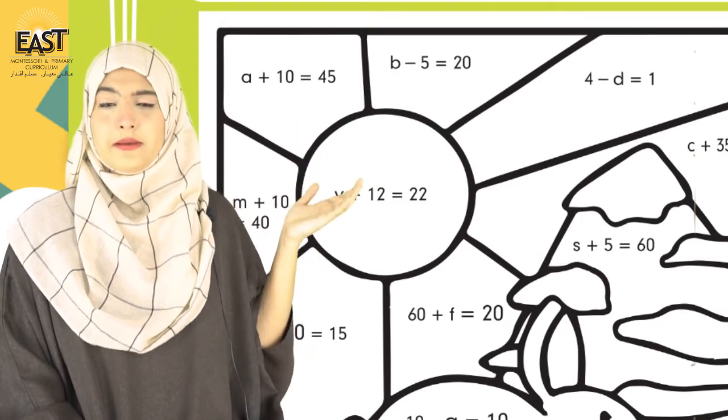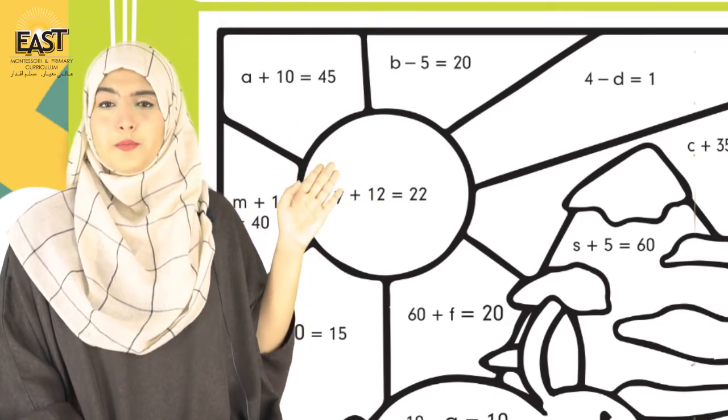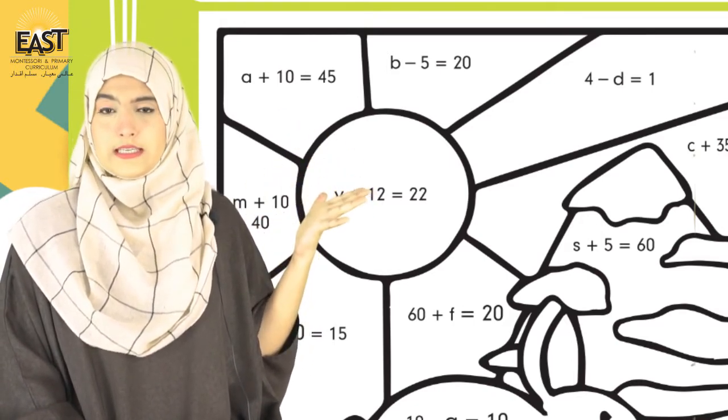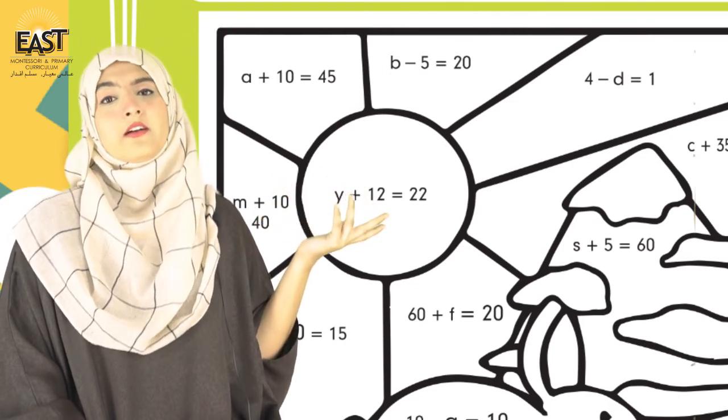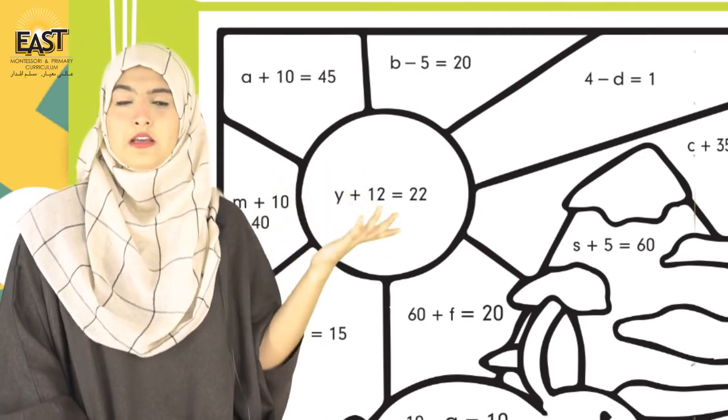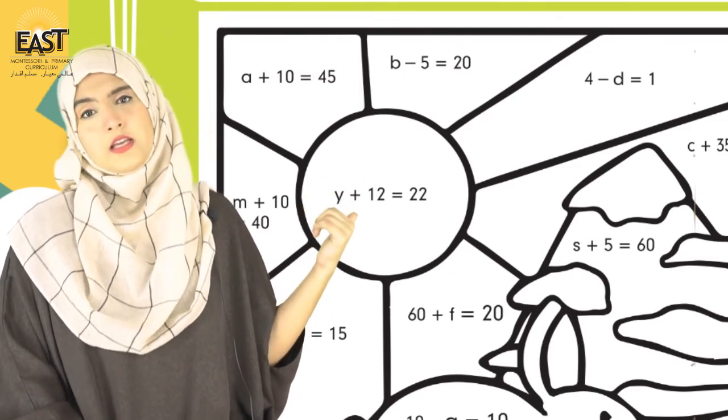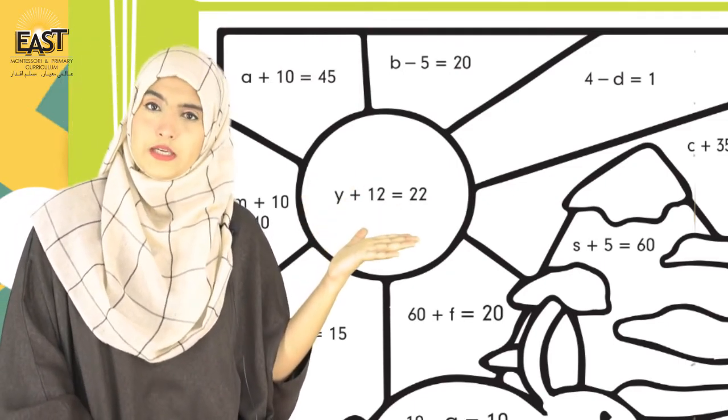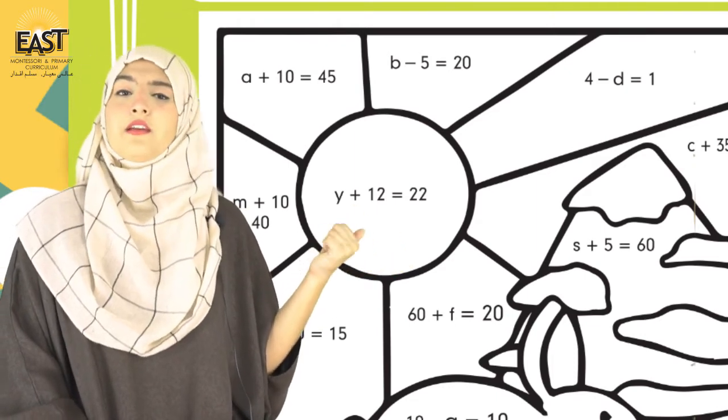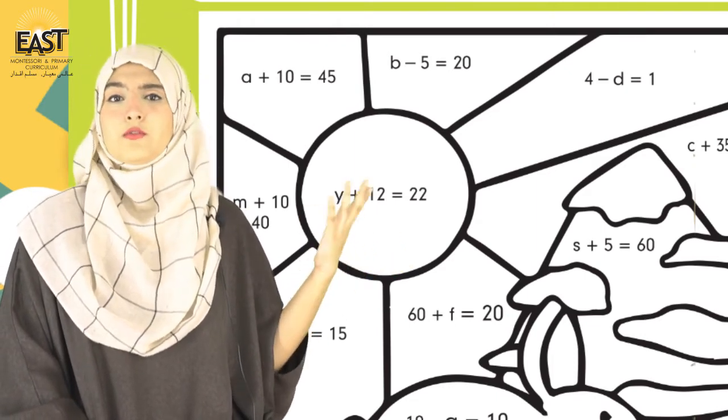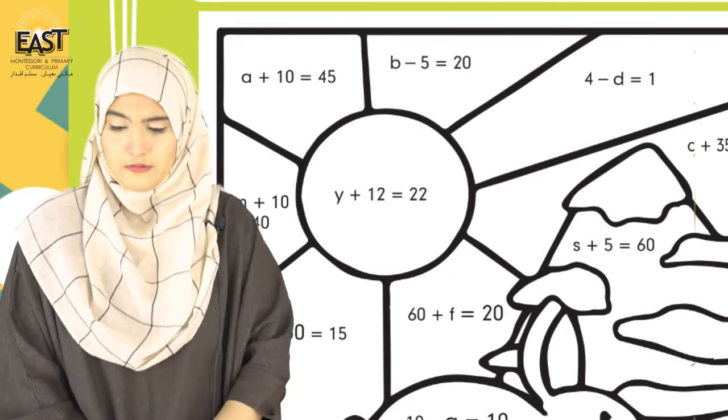Aapko aapnei explain kar rahi thi ki aapne operator ka reverse rule study kiya tha. Ek taraf plus hai, udher jake minus ho jayega. Yahaan minus hai, equals to ke udher jake plus ho jayega. Yahaan pe multiply hai, equals to ke next side jake divide ho jayega. And if it yahaan pe divide ho raha, equals to ke udher jake multiply ho jayega.